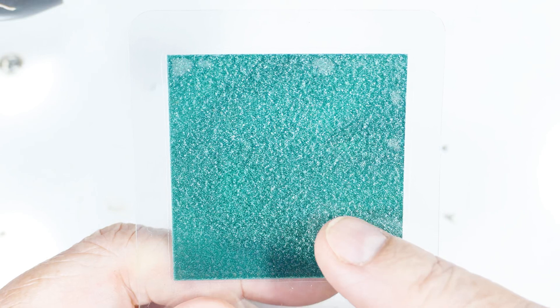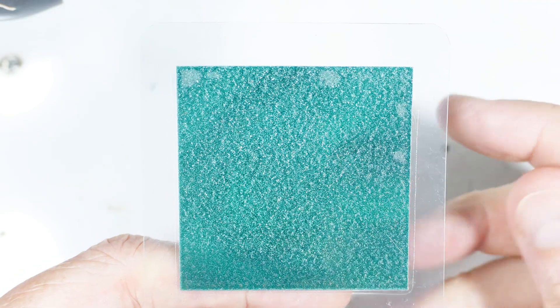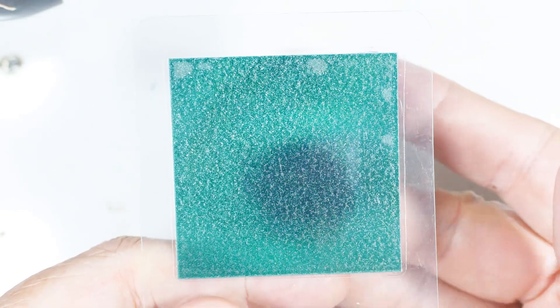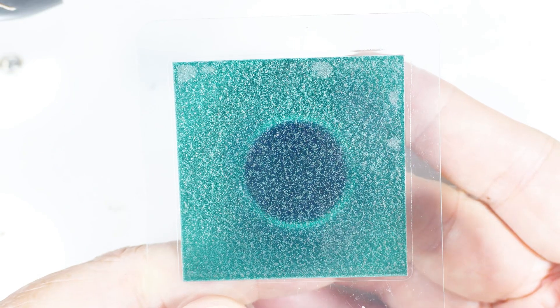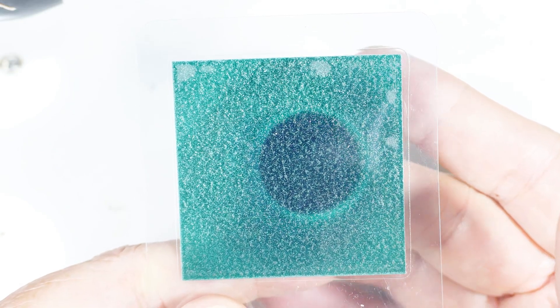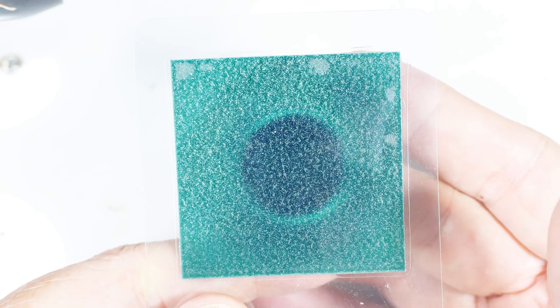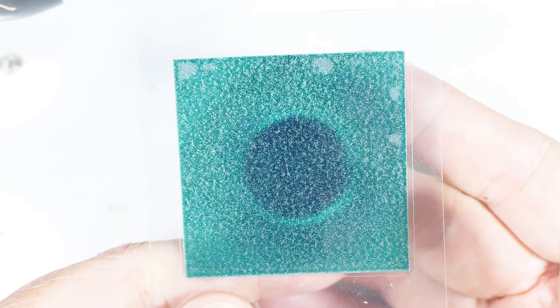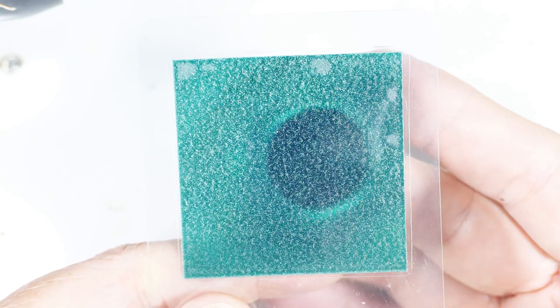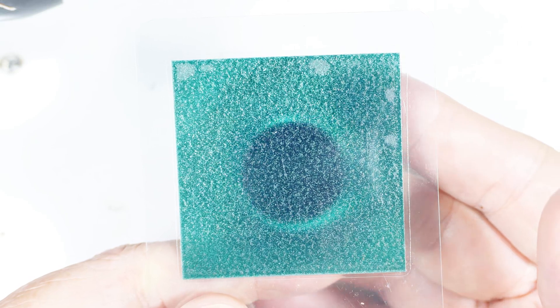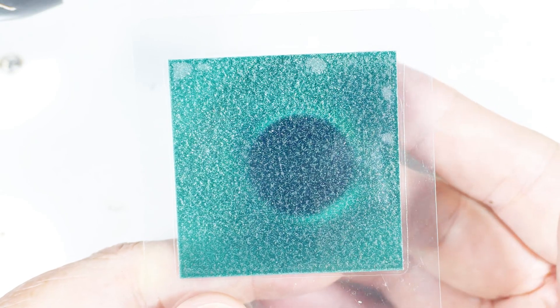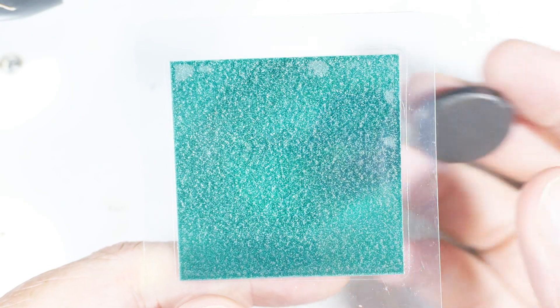And when the magnetic field is one way, the nickel lines up one way and it looks dark. And the other way it's flat and it looks light because it's reflecting the light back. And because it's a flake of nickel in oil, it won't respond very quickly, so that's not something it can overcome.